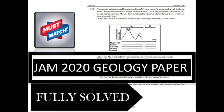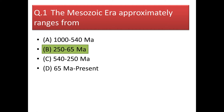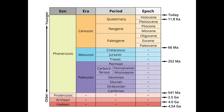Today we will solve the JAM 2020 question paper. The first question is: the Mesozoic era approximately ranges from — and the answer is it ranges from 250 to 65 million years.